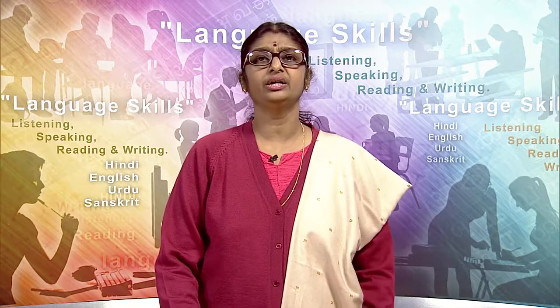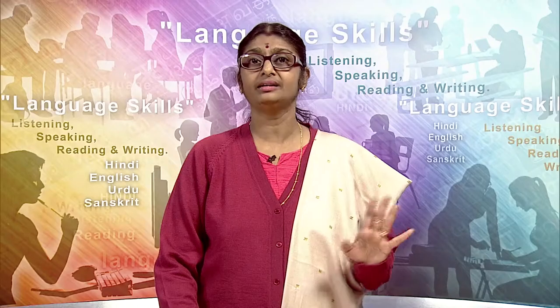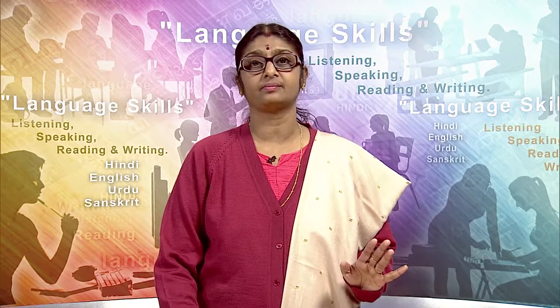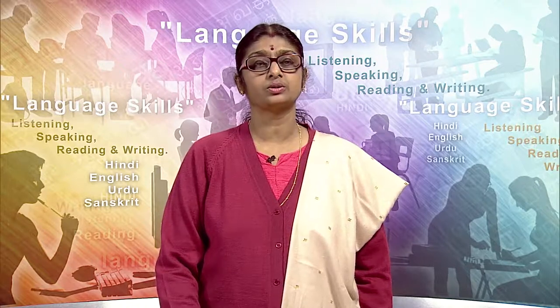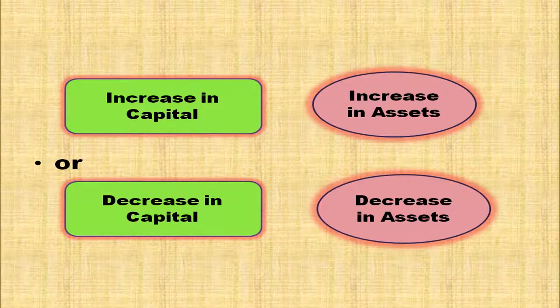In the accounting equation, there will be either an increase in capital or an increase in assets, or a decrease in capital or a decrease in assets in every transaction. It can appear in any of these four combinations — such as increase in capital or decrease in asset, or increase in asset or decrease in capital.